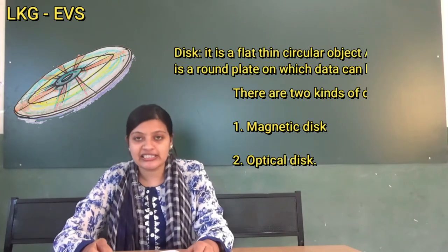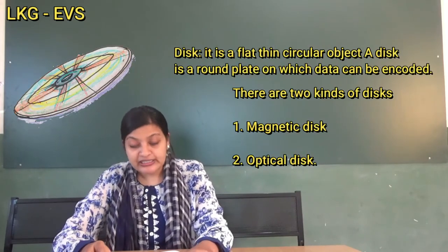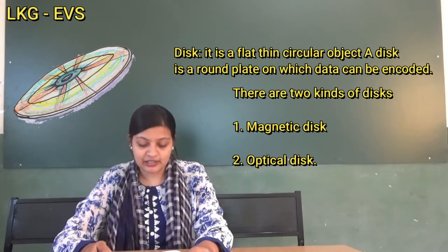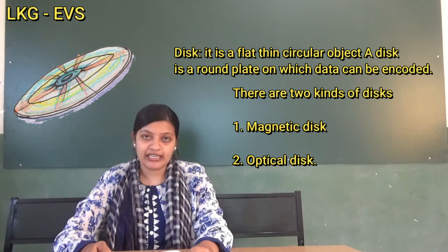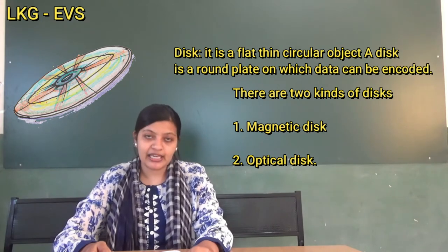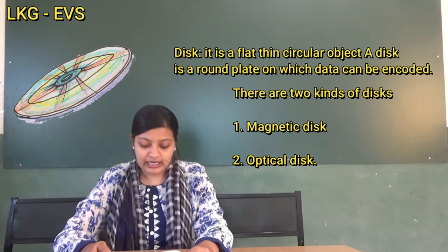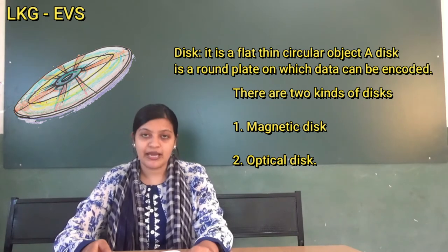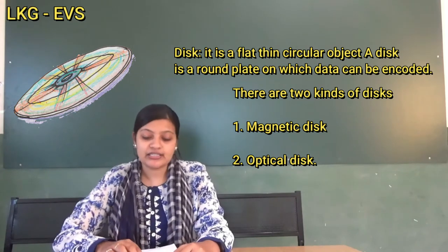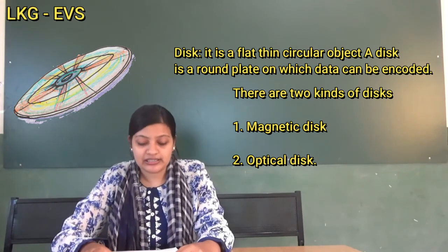Next, we will go to the letter D. D-I-S-K. Disc. It is a flat, thin, circular object and a storage plate on which data can be encoded. There are two kinds of discs: one is a magnetic disc and another one is an optical disc.